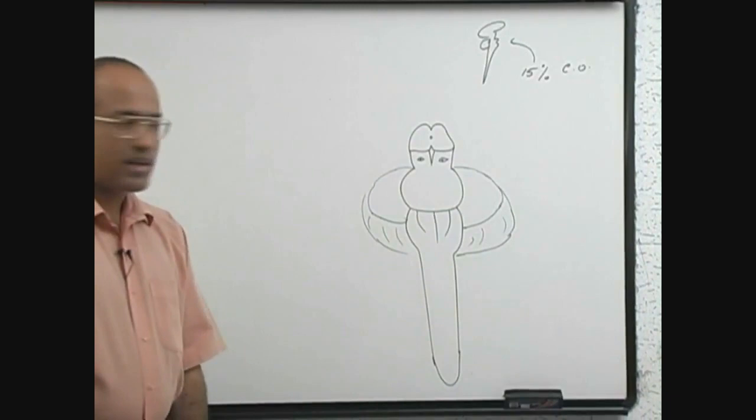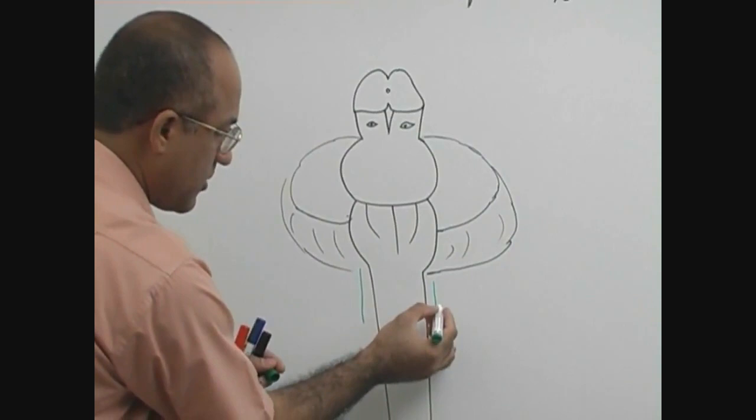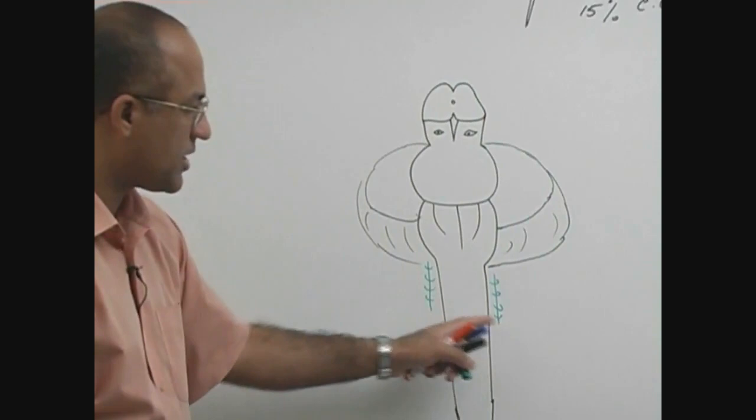Already you know that vertebral arteries have been moving like this on the sides through those foramina, no fun in explaining those. We have discussed it already. And you know from where they are coming? From subclavian arteries.